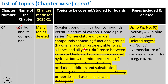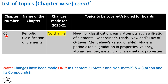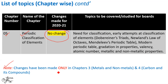Moving on to the last chapter, Chapter 5, Periodic Classification of Elements — no changes have been made in this chapter, and these are the list of topics you need to know from here. So we can conclude that changes in syllabus have been made only from Chapter 3 and Chapter 4, and majorly from Chapter 4.